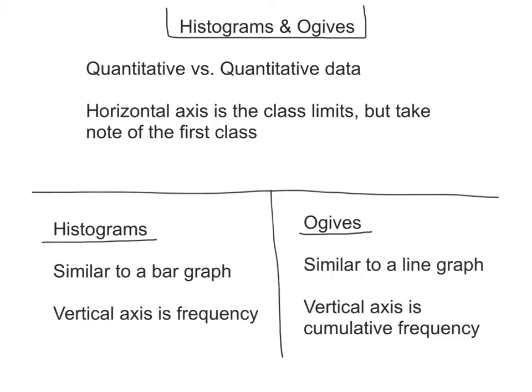So what are ogives and what are histograms? Well, we're talking about quantitative versus quantitative data here. Typically when we think about line graphs and bar graphs we think about qualitative. The horizontal axis is the class limits but note how the first class is going to be set up.